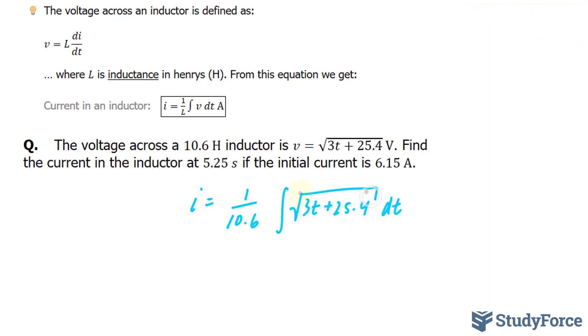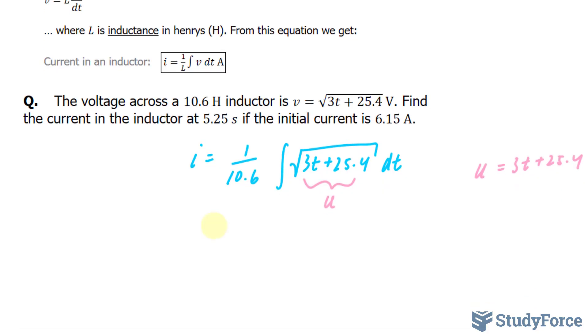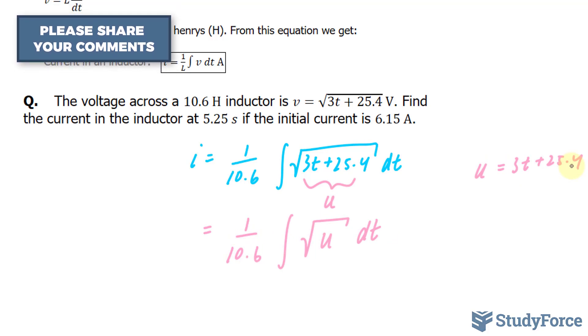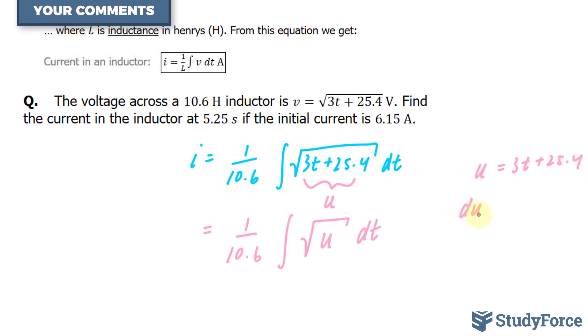Now I'll find the integral of this function. That's not hard to do. I'll set this part equal to u, that'll make it easier for me. So u is equal to 3t plus 25.4, just writing this for reference. Next I'll take the integral of u implicitly with respect to t. This gives me du is equal to 3 dt. Solving for dt, I get du over 3 is equal to dt, which I'll replace with this dt.